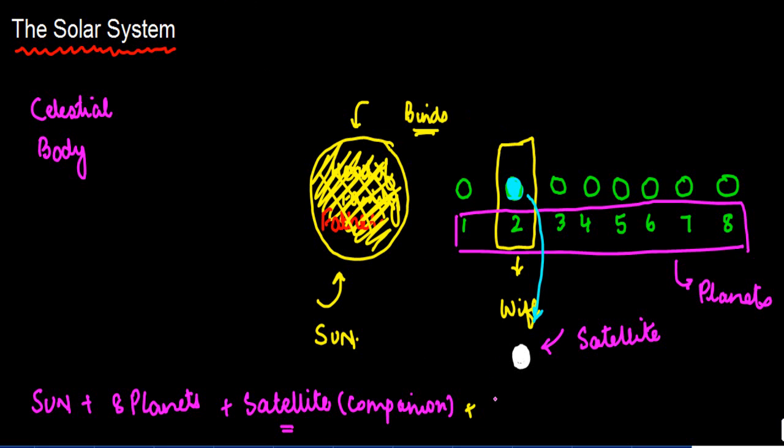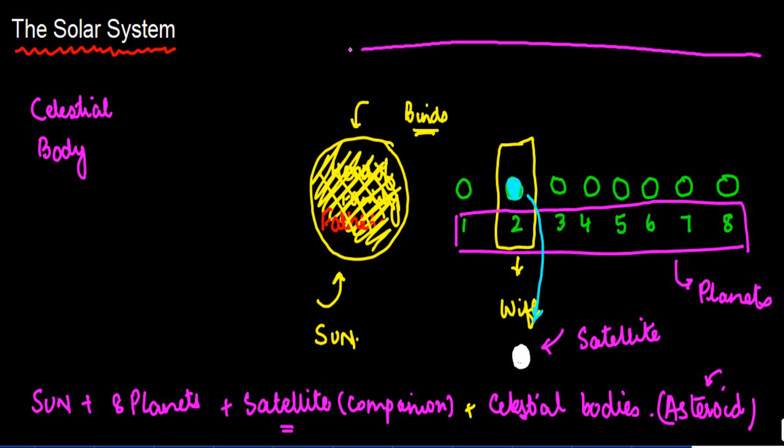Together they form a solar system. In addition there are certain other celestial bodies like an asteroid or a meteorite. Together entirely they form a solar system.